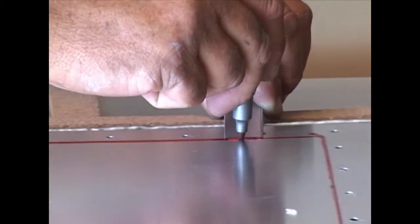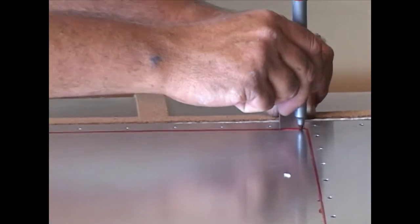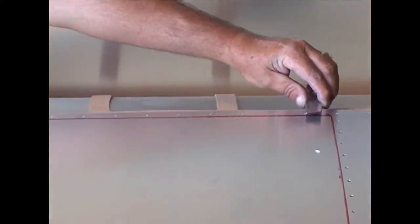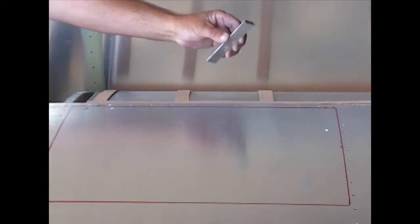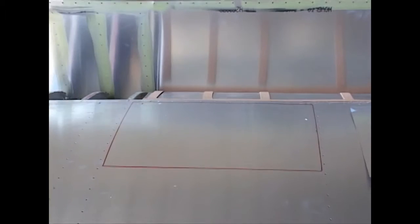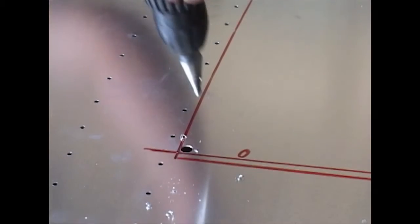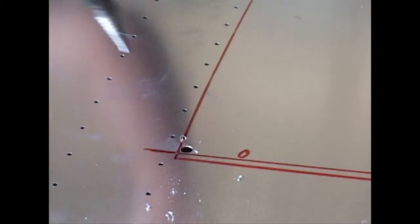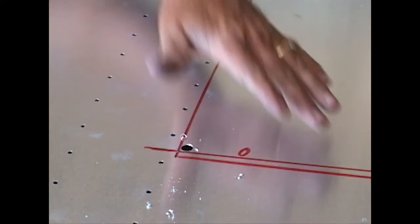This helps us locate that edge precisely so that when we go to cut we get a very nice fit and do not nick the spar itself. A good size hole needs to be drilled at each corner of our cutout.